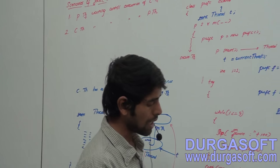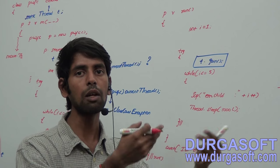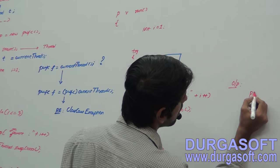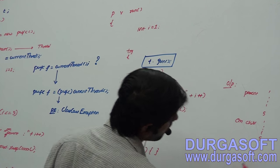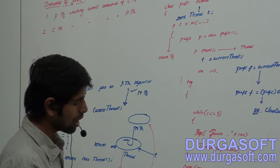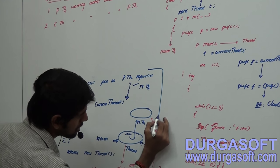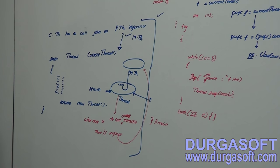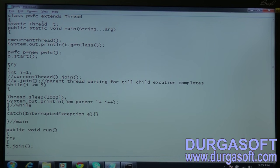You have to understand the currentThread method in the proper way. I am calling T.join - which thing is it going to impact? It will impact the main thread, which is the M thread reference. The output will be: first, main thread only will get executed. Earlier I showed you it was giving unpredictable output. Now child thread has to wait until parent thread execution completes. Parent will print one to five, and after that child will print one to five.